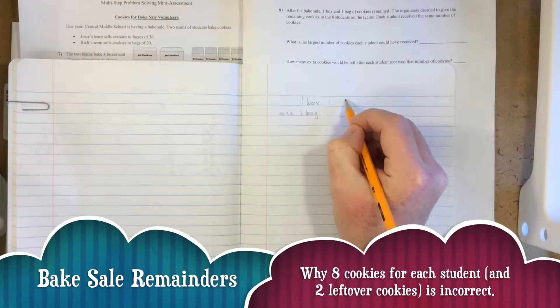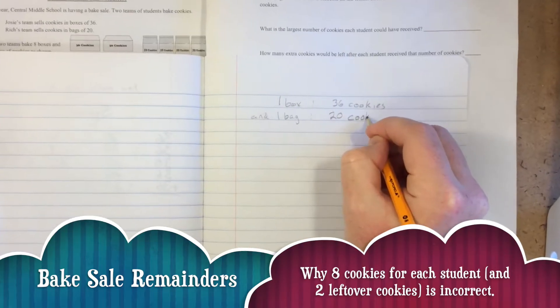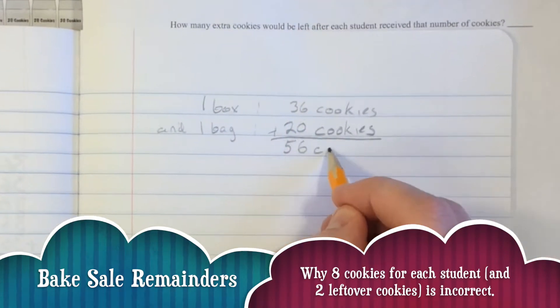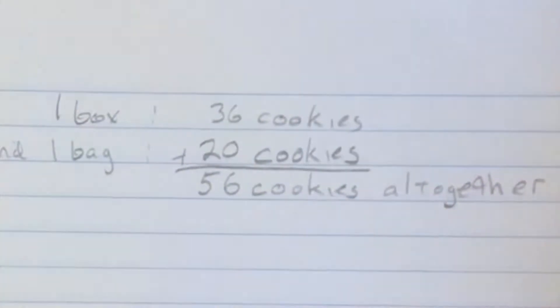So first we know one box has 36 cookies, one bag has 20 cookies, 36 plus 20, 56 total cookies.